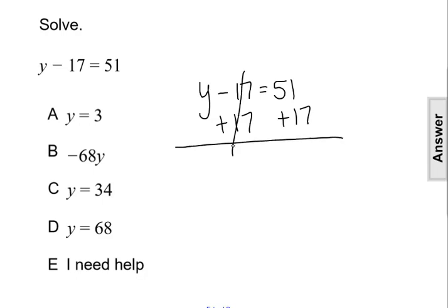So on the left, that will undo the subtracting 17 and leave us with our variable isolated. And then we'll have 51 plus 17, which is 68, on the right. So our answer is y equals 68, or answer choice D.